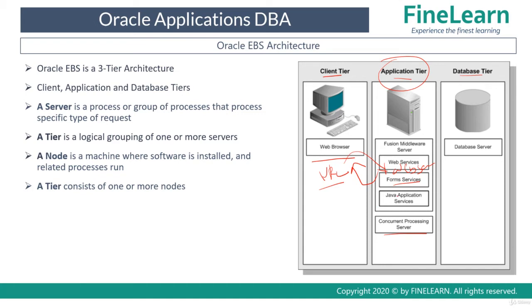So, based on the type of request, one of the servers of the application tier will listen to the request, process the request and send back the required output. A server is a process or group of processes that listens to a specific request, processes the request and sends back the output. A web server listens to web page requests, processes the request and sends back the web page. Similarly, a form server will listen to forms requests and send back the form. So, a server is basically nothing but a process.